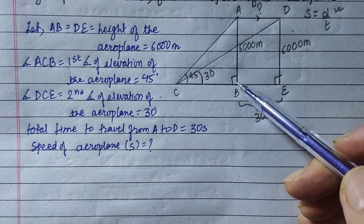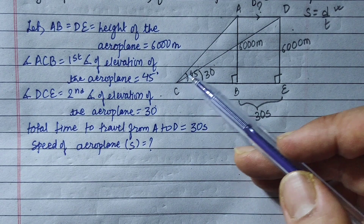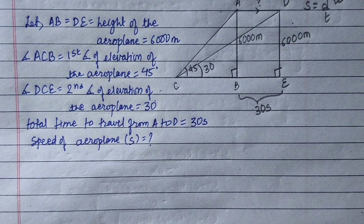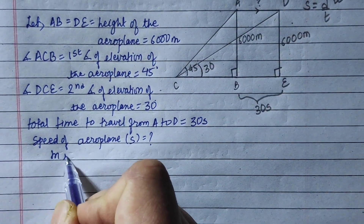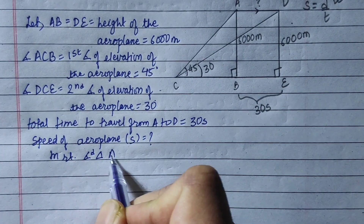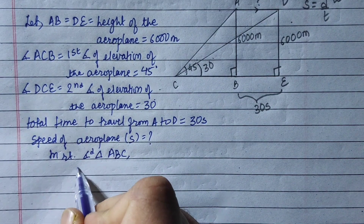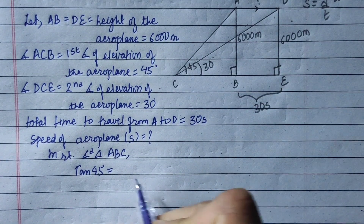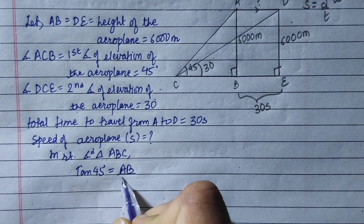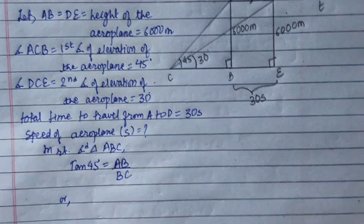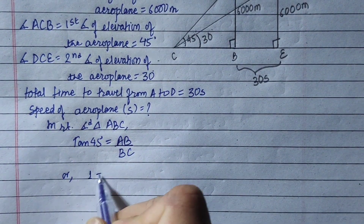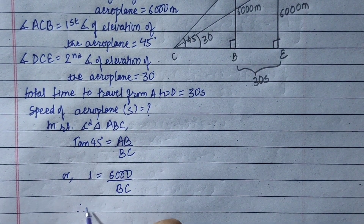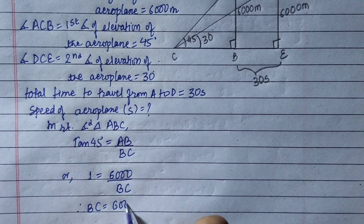In right-angled triangle ABC, tan 45° equals perpendicular over base, which is AB over BC. tan 45° equals 1, AB equals 6,000, BC is unknown. Therefore BC equals 6,000 meters.